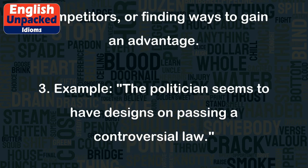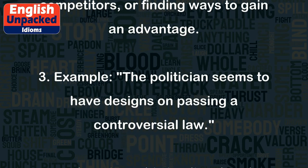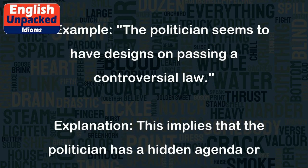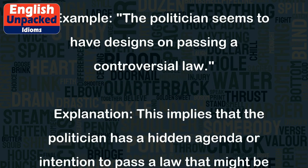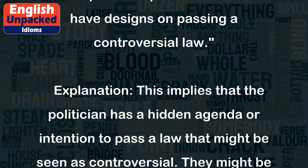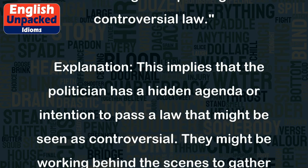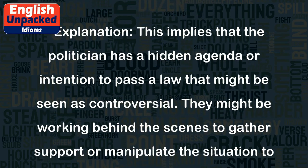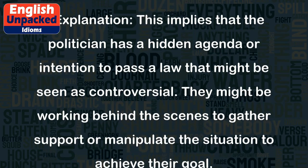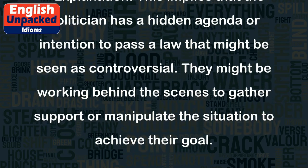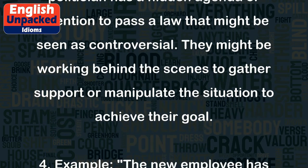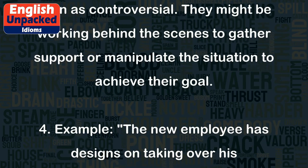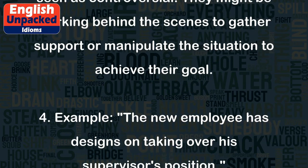Example 3: The politician seems to have designs on passing a controversial law. This implies that the politician has a hidden agenda or intention to pass a law that might be seen as controversial. They might be working behind the scenes to gather support or manipulate the situation to achieve their goal.